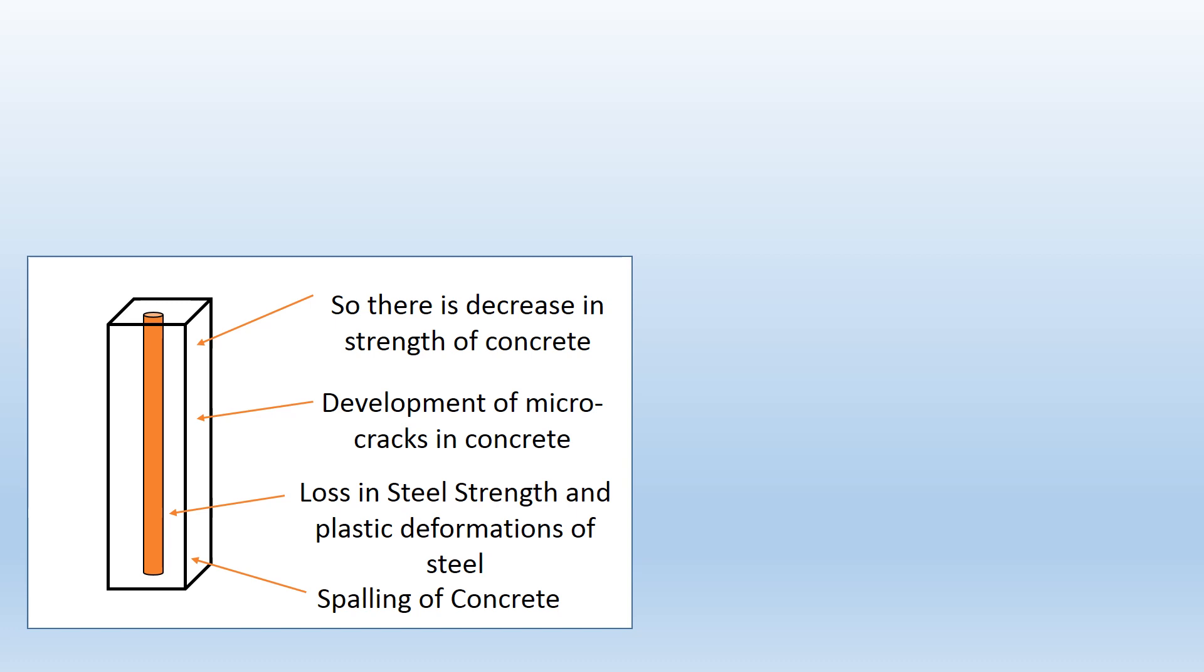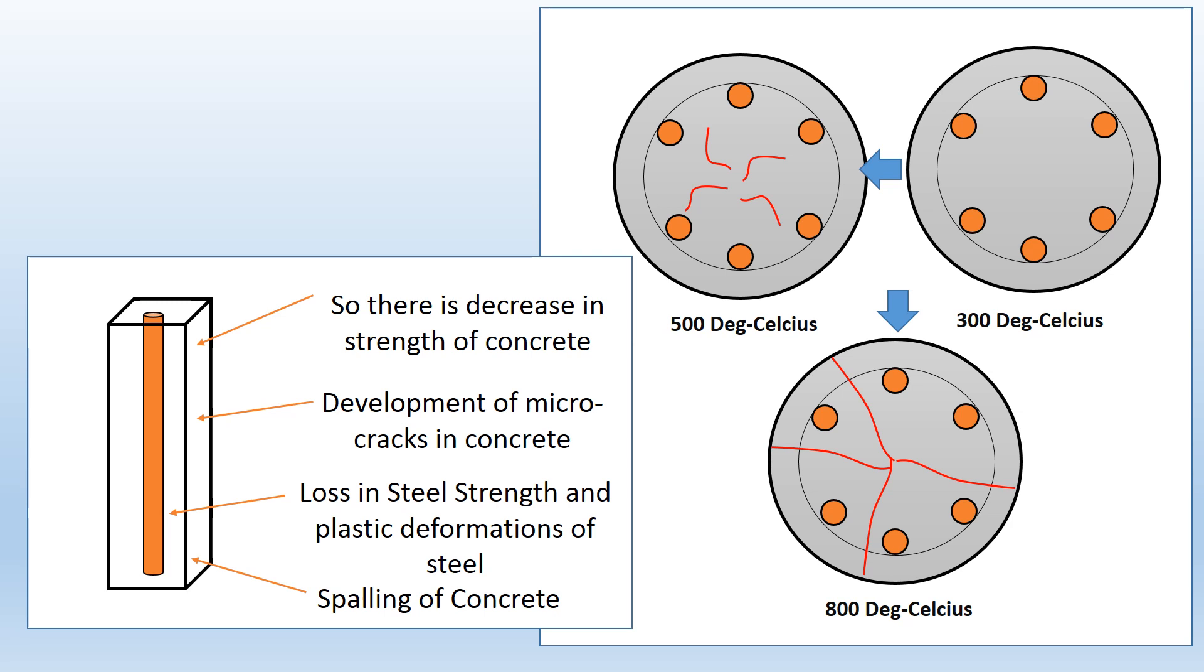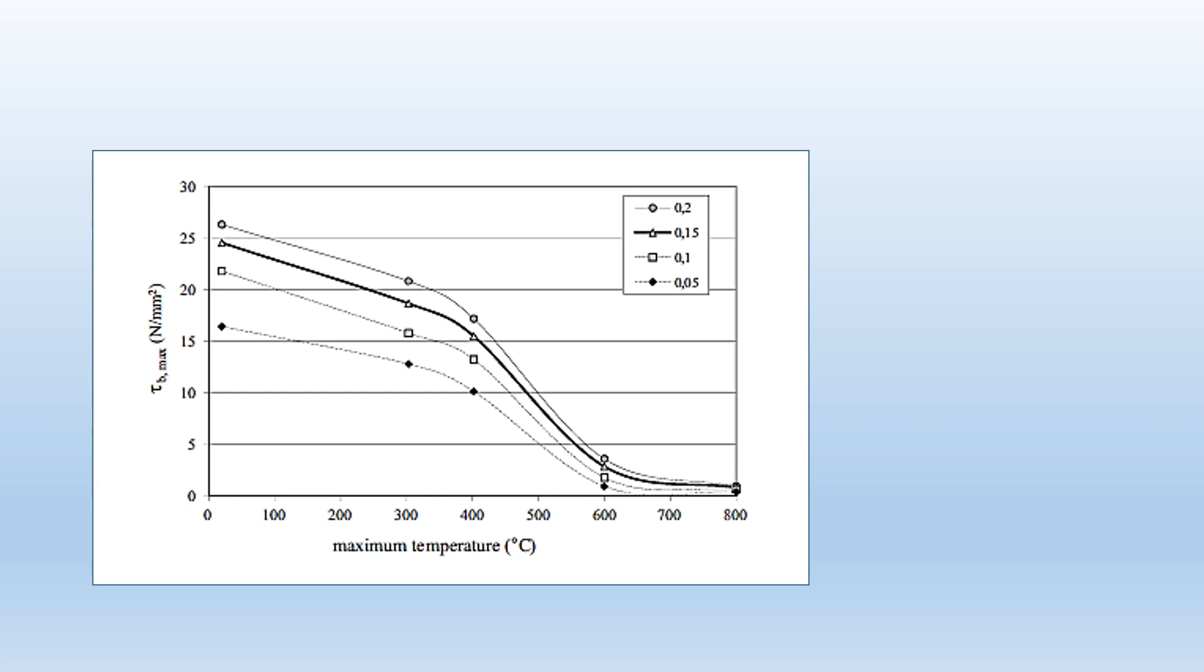So we could say that in a reinforced concrete sample, it could be without cracks, it could be with partial cracks, and at higher temperature there could be full cracks in the concrete sample. So what happens to the bond strength of reinforced concrete at high temperature?